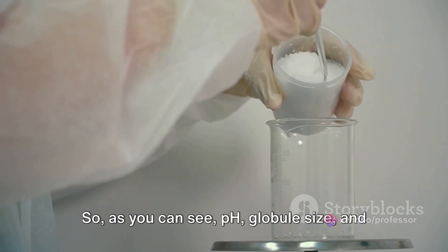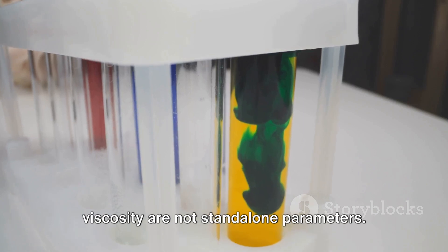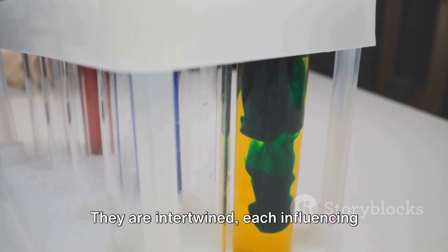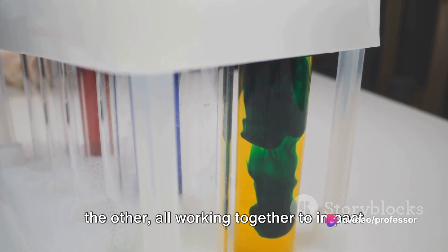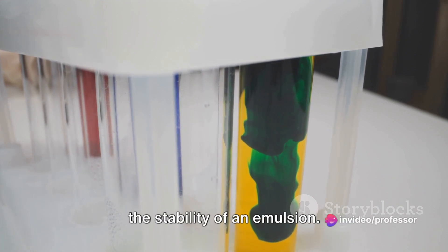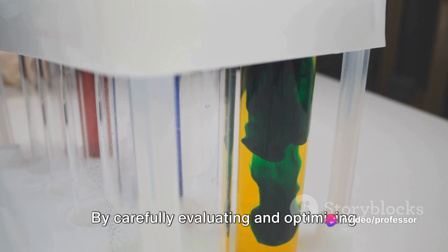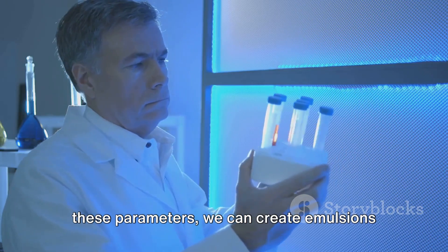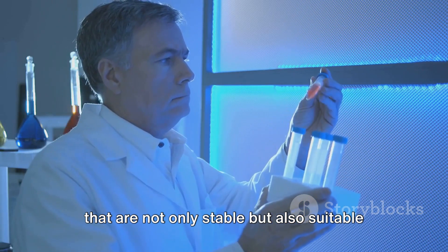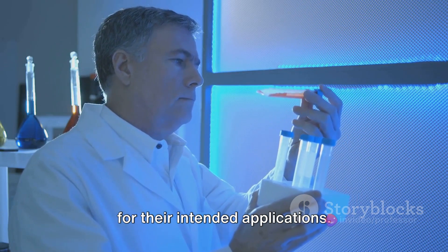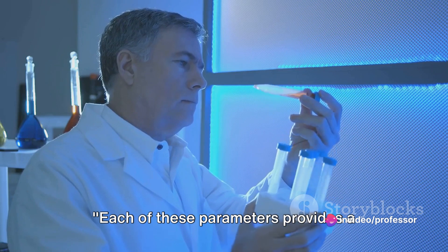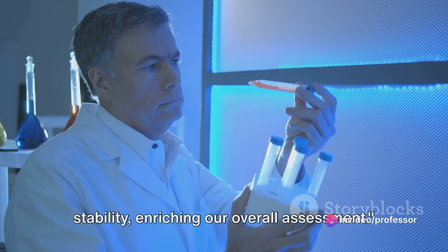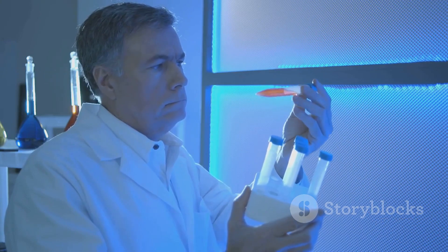So, as you can see, pH, globule size, and viscosity are not stand-alone parameters. They are intertwined, each influencing the other, all working together to impact the stability of an emulsion. By carefully evaluating and optimizing these parameters, we can create emulsions that are not only stable, but also suitable for their intended applications. Each of these parameters provides a different perspective on emulsion stability, enriching our overall assessment.